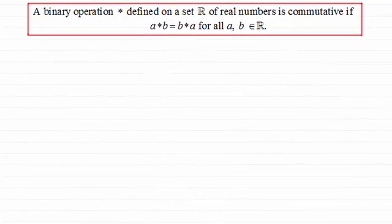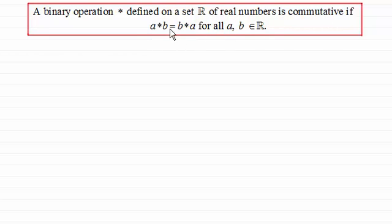Hi there. In this video I want to talk about another property, and that is commutativity. The definition is: if we have a binary operation, let's say star, defined on a set of real numbers, then it's commutative if a star b equals b star a for all a, b which are members of the set of real numbers.